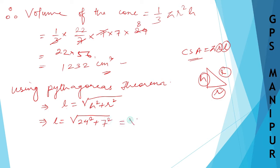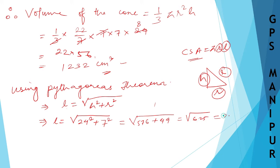Calculating: 24² = 576, and 7² = 49. So l = √(576 + 49) = √625 = 25. We got the value of l as 25 meters.